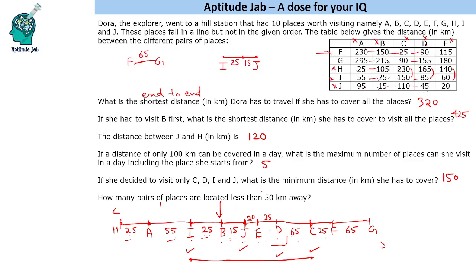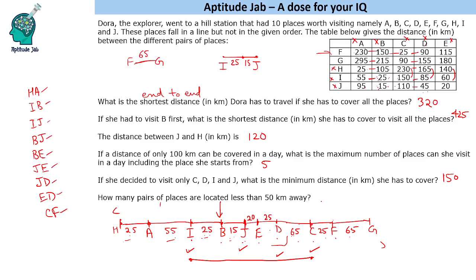How many pairs of places are located less than 50 kilometers away? Starting from one end: H-A is 25; then I-B is 25; then I-J is 40; then B-J is a pair; B-E is 35; J-E is 20; J-D is 45; E-D is 25; and C-F. Counting them: 1, 2, 3, 4, 5, 6, 7, 8, 9. So there are 9 such pairs of places.